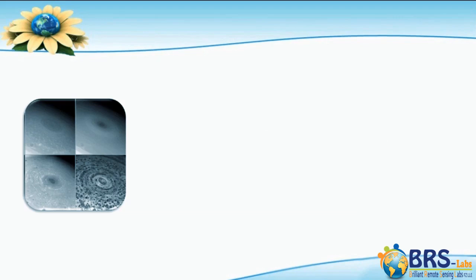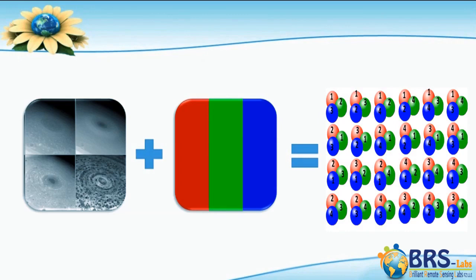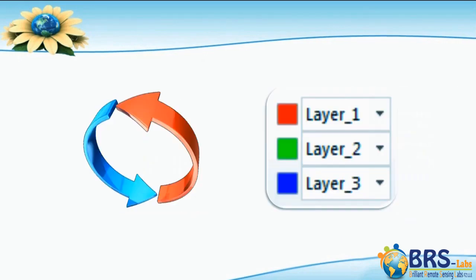For example, if the image is made of four layers and the screen only needs three layers to display red, green, and blue, in this case we can display the image in 24 different band combinations, using three layers each time in a different order in the RGB, as we see in the video. This change in band combinations is considered one of the most important operations, especially when trying to clearly display a specific feature.